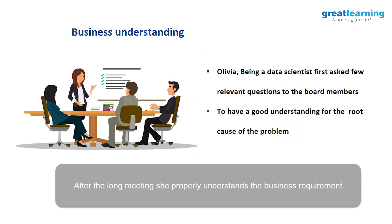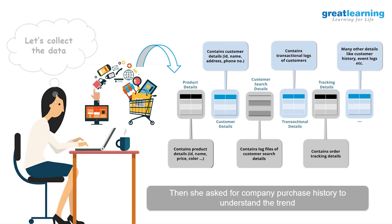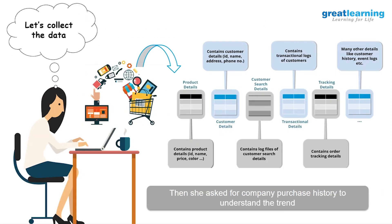They called Olivia. Olivia is a data scientist. Being a data scientist, Olivia wants to understand the business problem first — what is the root cause of their sales decline. She asks a few relevant questions to the company board members related to sales, to gain a good understanding of the root cause of the problem. After a long meeting, she is able to understand the business requirement. Then she tries to collect data, because she needs to analyze past data to get proper insights into why there is a direct fall in sales.